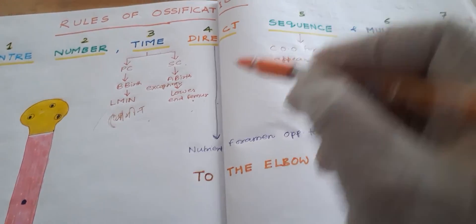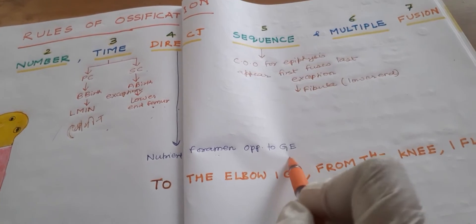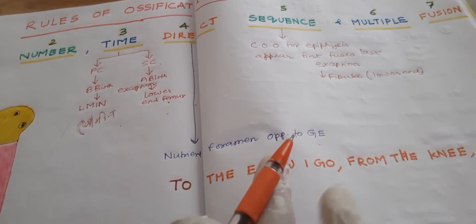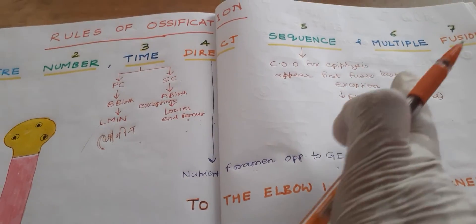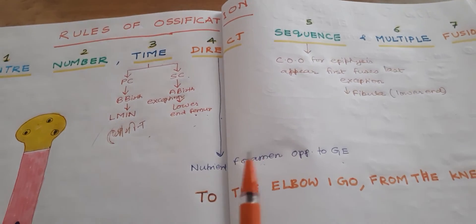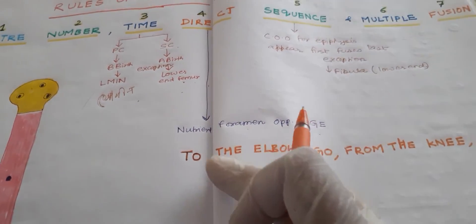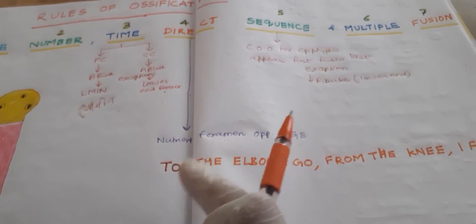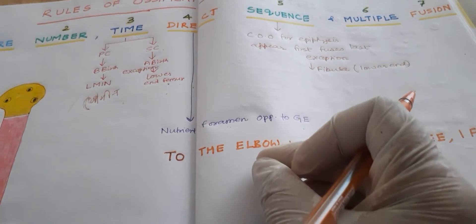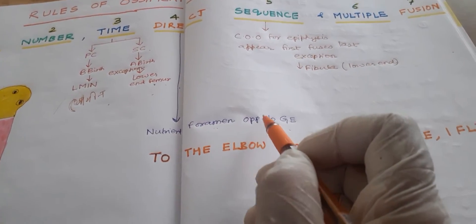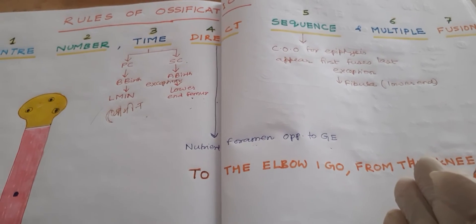The direction of the nutrient foramen is opposite to the growing end. If the nutrient foramen is directed towards the upper side, the nutrient artery is going to the upper side, and the opposite — the lower end — will be the growing end. This is because at the growing end there is more and more osteoblast deposition, which hampers the movement of the artery.